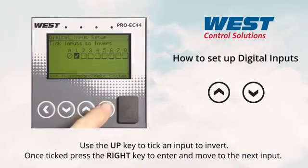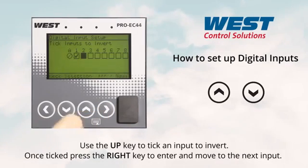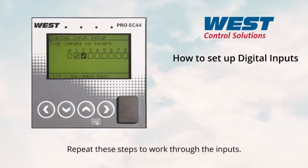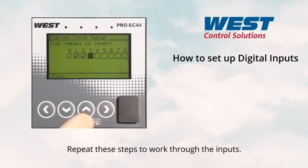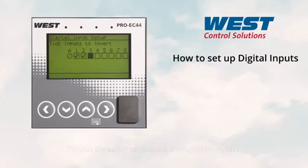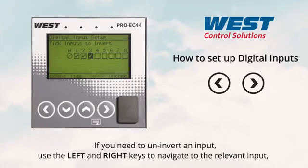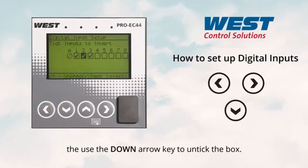Use the up key to tick an input to invert. Once ticked, press the right key to enter and move to the next input. Repeat these steps to work through the inputs. If you need to un-invert an input, use the left and right keys to navigate to the relevant input, then use the down arrow to untick the box.